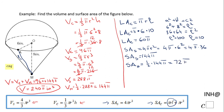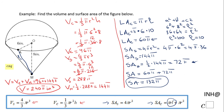Now we have both: the lateral area of the cone and the surface area of the hemisphere. We add them to get the surface area of this composite shape: 60π plus 72π equals 132π. The surface area of this composite shape is 132π square inches. If you enjoyed this video, don't forget to click the like button and come back to C squared for more help. Thank you.